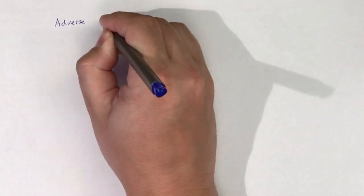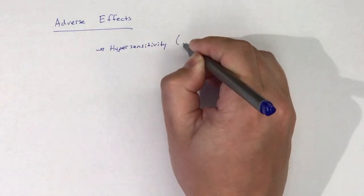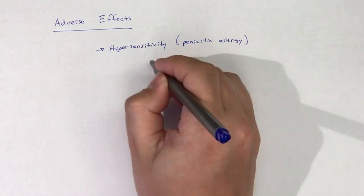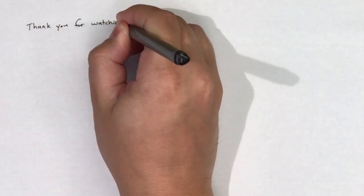The adverse effects of anti-pseudomonal penicillins are very similar to those of other penicillins, including penicillin G. Hypersensitivity to the beta-lactam ring is the most prominent adverse effect.